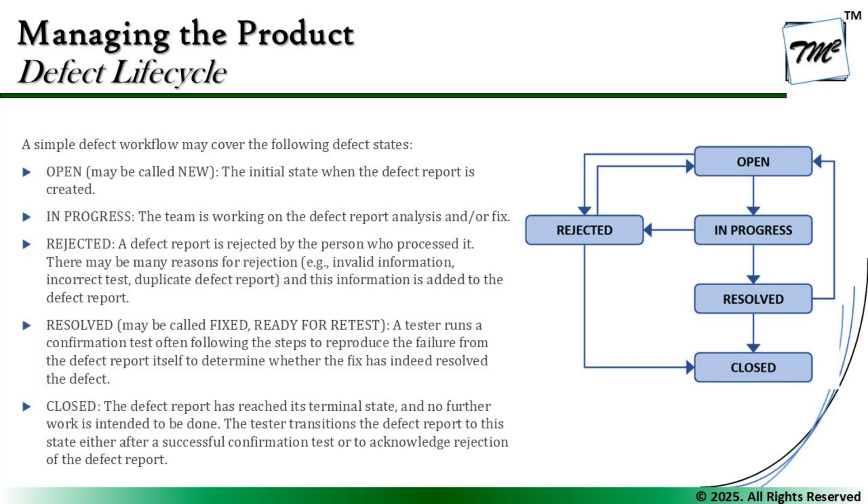We are taking a template example. On the screen we have some major stages like Open, In Progress, Resolved, Closed, and on the left we have Rejected. It's not necessary that these are the only statuses one should have — these are the parent statuses which must always be present in the defect life cycle, but organizations can have their own way of handling and managing defects. ISTQB does not deep dive and recommend a specific life cycle because they don't know your project, your product, or what you would do with your defect data. ISTQB can only talk about the parent statuses which should be included, without which a defect life cycle would be incomplete.